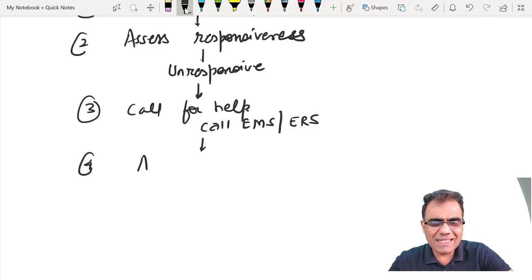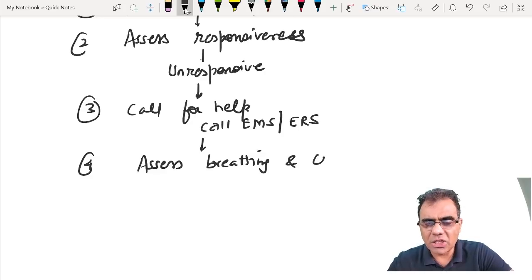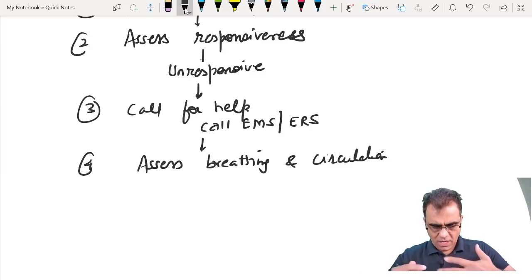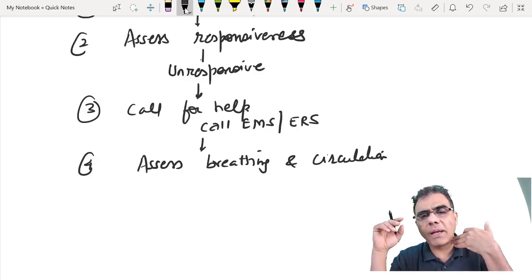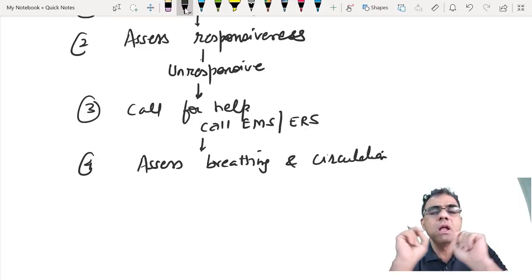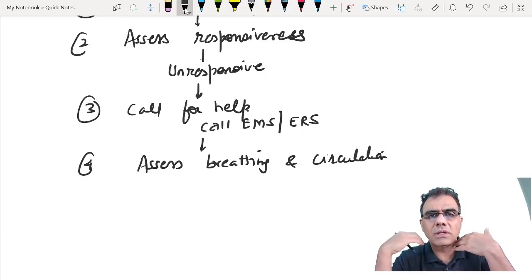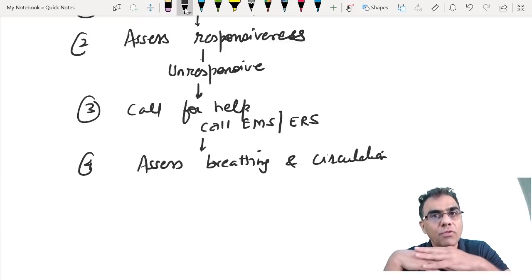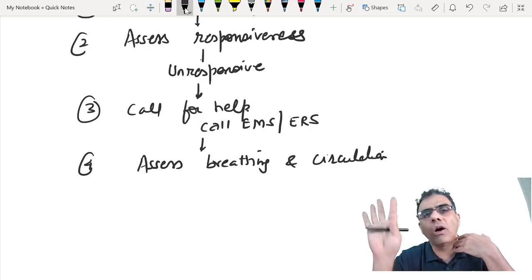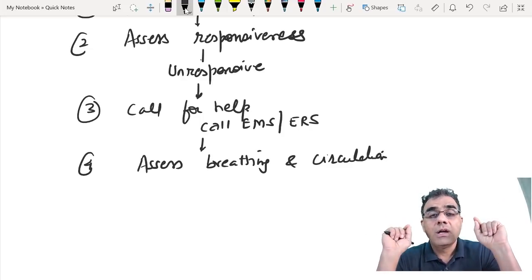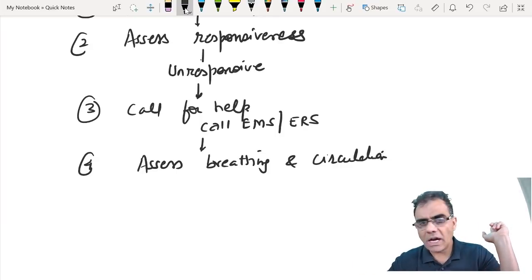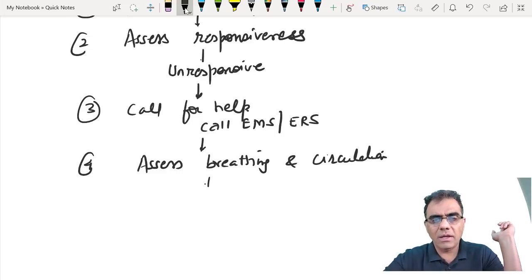After calling for help or emergency response team, now you assess breathing and circulation. Breathing you assess by scanning the chest movements - look at the chest, whether it's moving or not. And circulation by palpating the carotids. However, 2020 guideline says if you are not able to palpate carotid pulse and you're not an expert, for common man, if they're not able to assess properly, consider it absent. And even for us, if you are in doubt, consider it as absent. Don't waste time. You should not take more than 10 seconds.